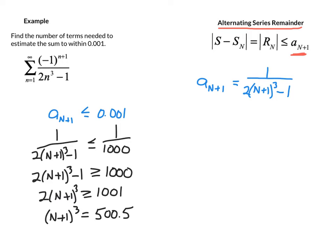Then we take our cube roots. So n plus 1 is greater than or equal to the cube root of 500.5, which is about 7.94. And then we subtract 1.